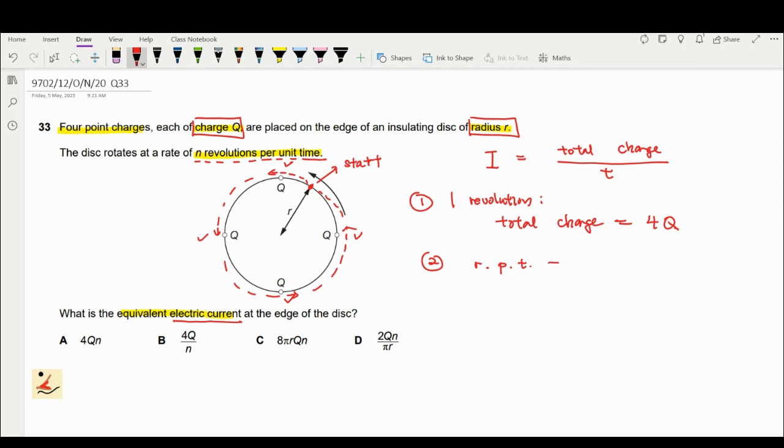This is basically your frequency. It's the number of rotations or revolutions per unit time. Frequency is given as one over the period, so n equals one over T.